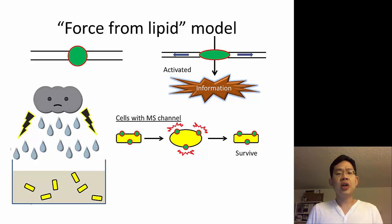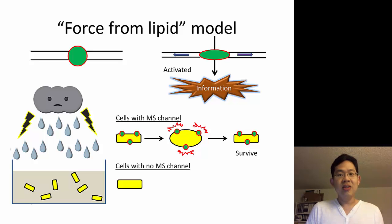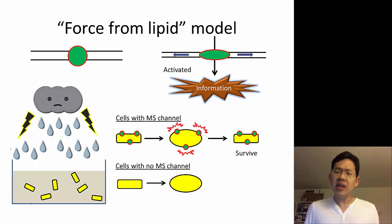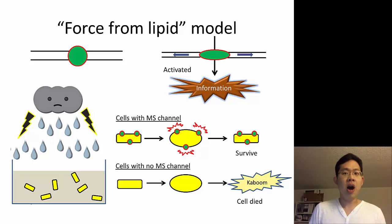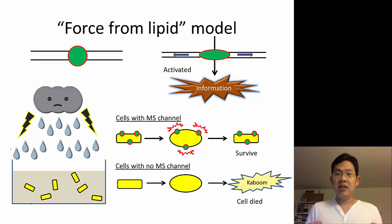A couple of scientists tried to remove this mechanosensitive channel — so what happened? If you are a poor bacterium that has no mechanosensitive channel, as the osmosis process happens, the water keeps flowing in and in, and you keep swelling, swelling, and swelling until you pop, and this poor bacterium dies. This demonstrates that the bacterial mechanosensitive channel protects bacteria against environmental changes.